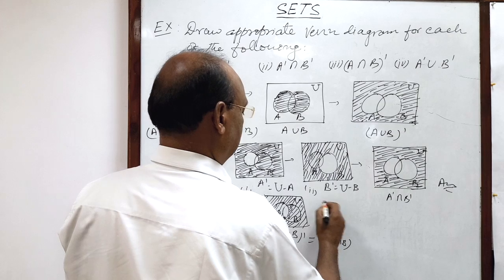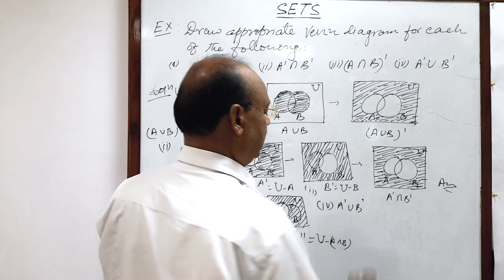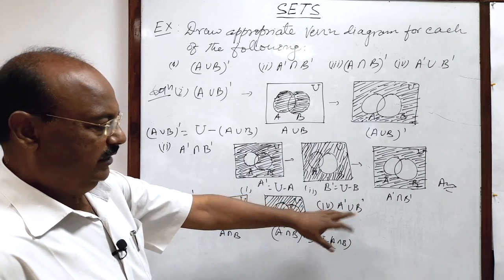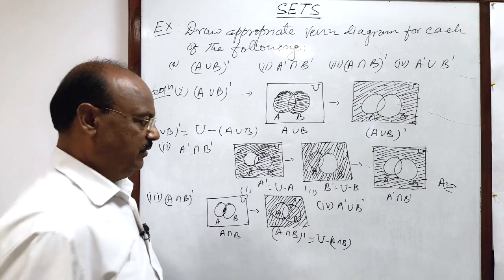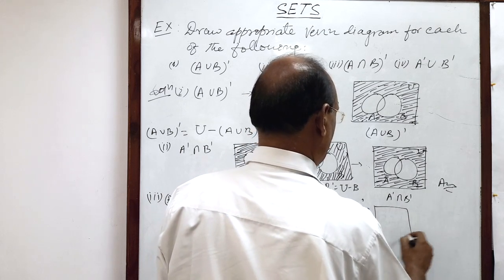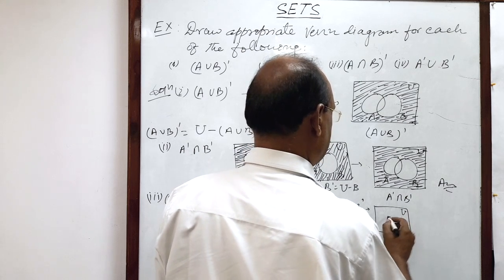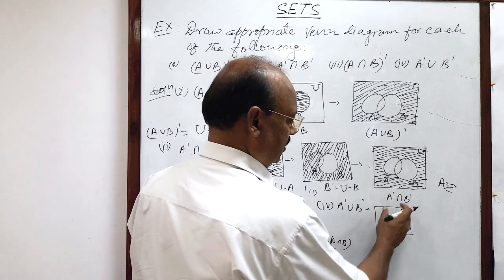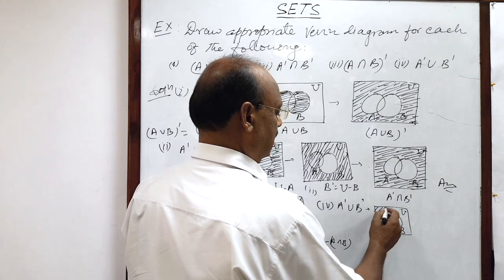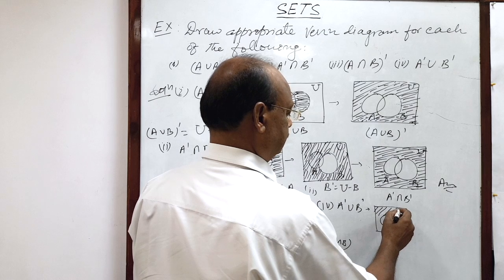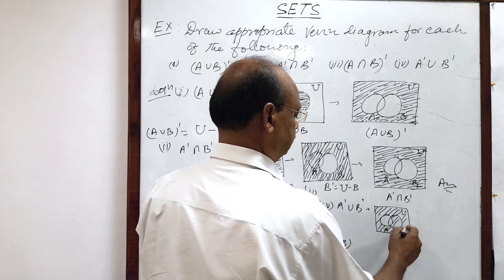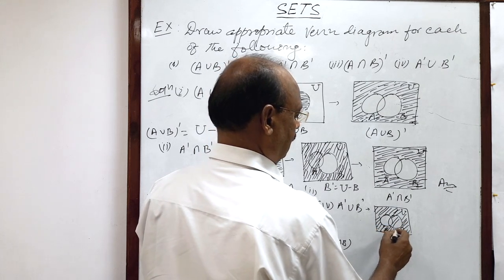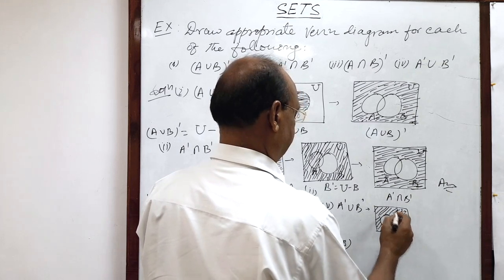Now, the last, fourth part: A complement union B complement. First of all, we will find A complement, then B complement, then the union of these two — meaning the combination of both shaded portions. So first we make A complement. This is the universal set, this is set A, this is set B. A complement means all the area of the universal set other than set A. This is the diagram for A complement.